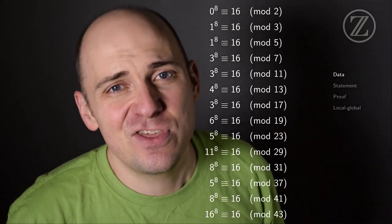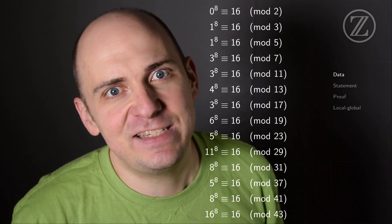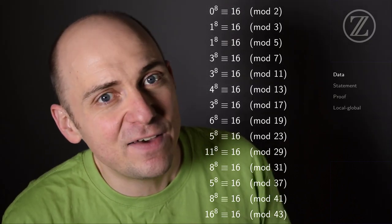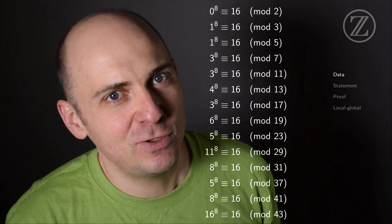We've got 3 to the 8th is 16 modulo 7, 11, and 17. We've got 5 to the 8th is 16 modulo 23. We've got 11 to the 8th is 16 modulo 29.